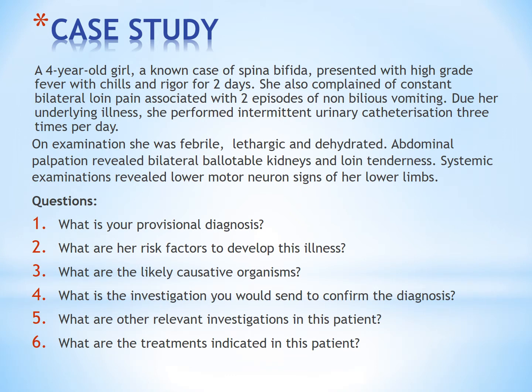A 4-year-old girl, a known case of spina bifida, presented with high-grade fever with chills and rigor for 2 days. She also complained of constant bilateral loin pain associated with 2 episodes of non-bilious vomiting. Because of her underlying illness, she performed intermittent urinary catheterization 3 times per day. On examination she was febrile, lethargic, and dehydrated. Abdominal palpation revealed bilateral ballotable kidneys and loin tenderness.